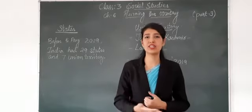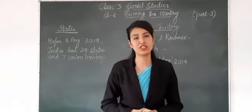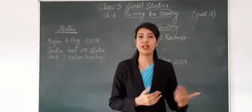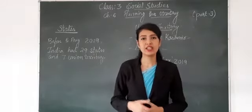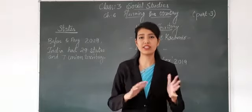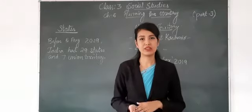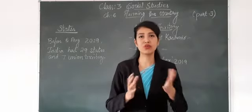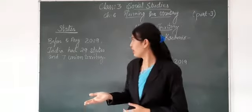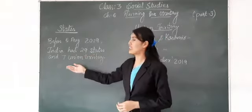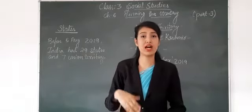As you will see in your book, India had 29 states and only 7 union territories. Because before 5th August 2019, Jammu and Kashmir was also our state. Before that, India had 29 states and 7 union territories.